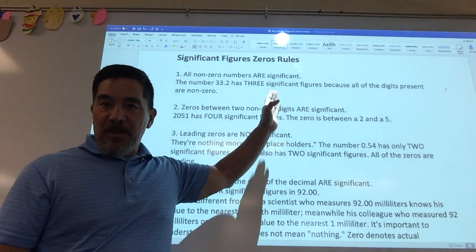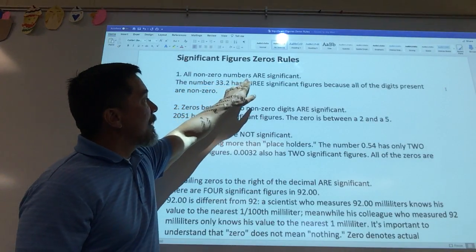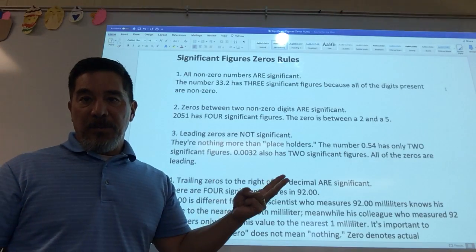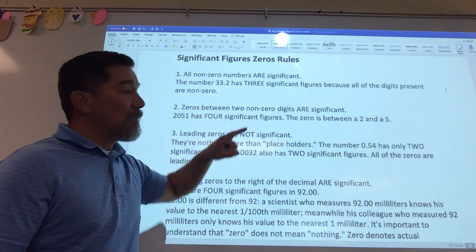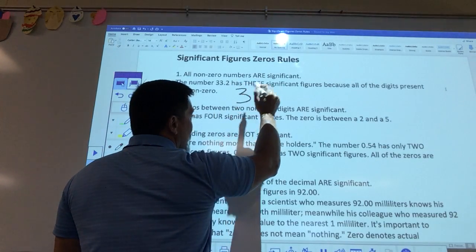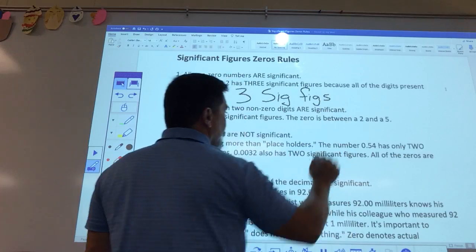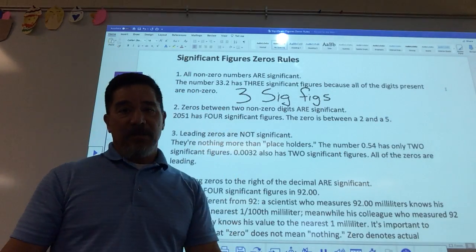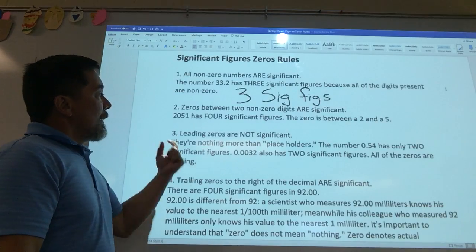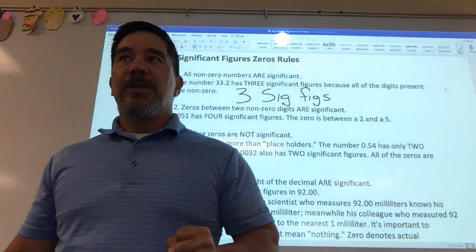All non-zero numbers are what we call significant. They count. They count in precision. So all non-zero numbers are significant. So let's just look at this number, 3.32. The 3 is non-zero. The other 3 is non-zero. The 0.2 is non-zero. That has 3 significant figures in it. I'm going to call it 3 sig figs. So it has 3 significant figures. You with me on that?